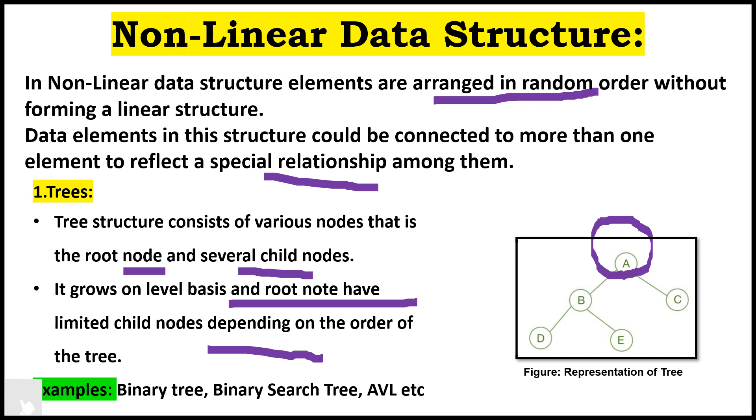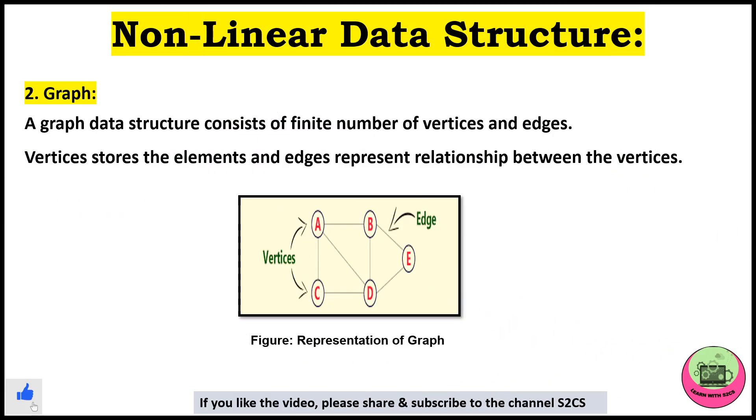Next is the graph. A graph data structure consists of finite number of vertices and edges. Vertices store the elements and the edges represent the relationship between the vertices. See A, B, E, these all are the vertices, and the edges A to B, B to E, these are the edges. What it does is it shows the relationship that there exists a connection between the nodes A and B.